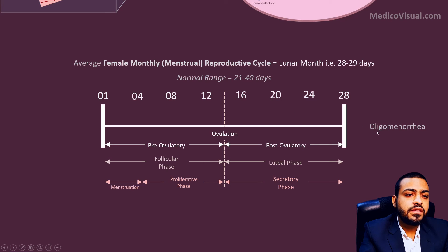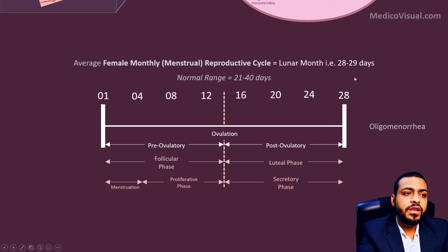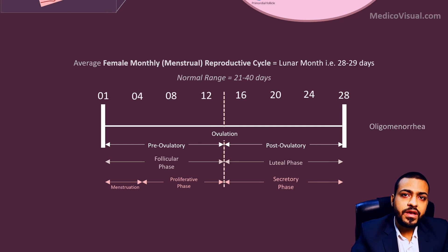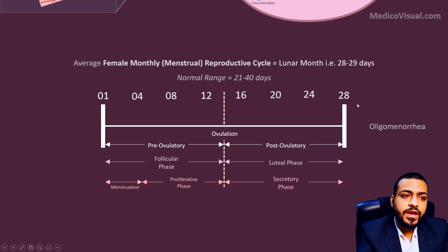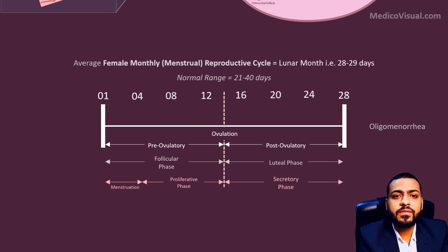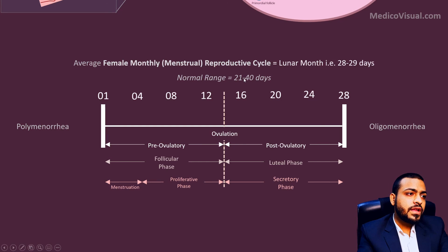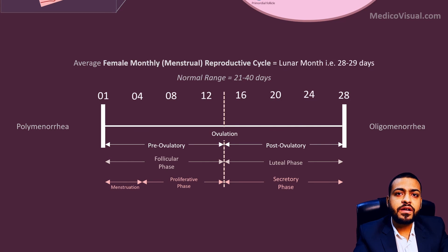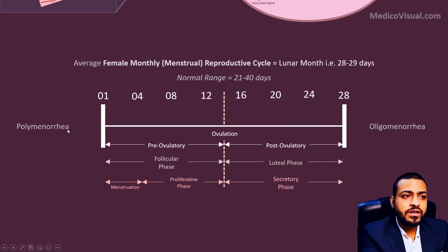Another important thing to discuss is oligomenorrhea. If the cycle becomes longer than normal — more than 40 days — the female will experience fewer cycles and fewer menstruations in her lifetime. That is oligomenorrhea; oligo means less and menorrhea refers to menstruation. If the cycle becomes shorter than 21 days, the female will experience more than the expected number of menstruations in her lifetime, and that is called polymenorrhea. So polymenorrhea means a shorter menstrual cycle, and oligomenorrhea means a longer menstrual cycle.